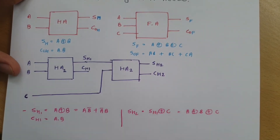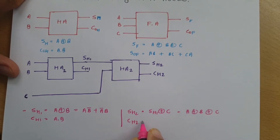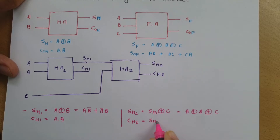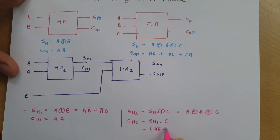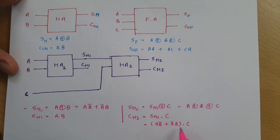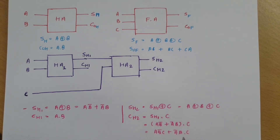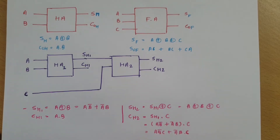Now, what is CH2? CH2 is the ANDing of the two inputs to the second half adder, so CH2 equals SH1 dot C. Since SH1 equals A·B̄ plus Ā·B, substituting gives CH2 equals (A·B̄ plus Ā·B) dot C, which simplifies to A·B̄·C plus Ā·B·C.